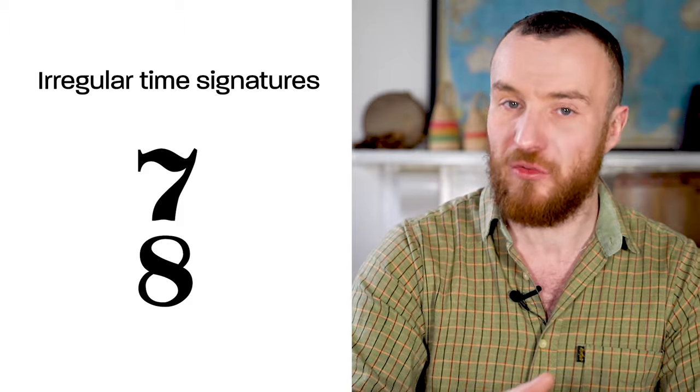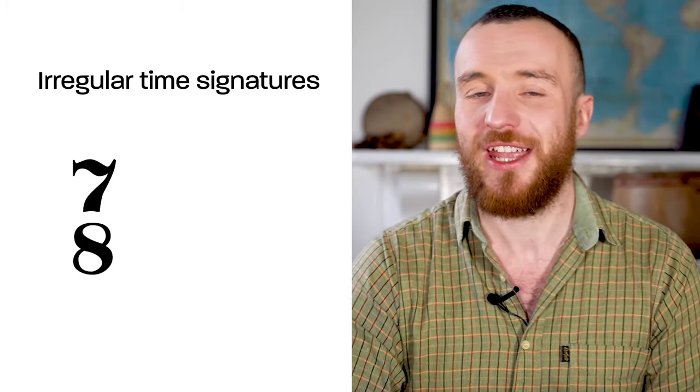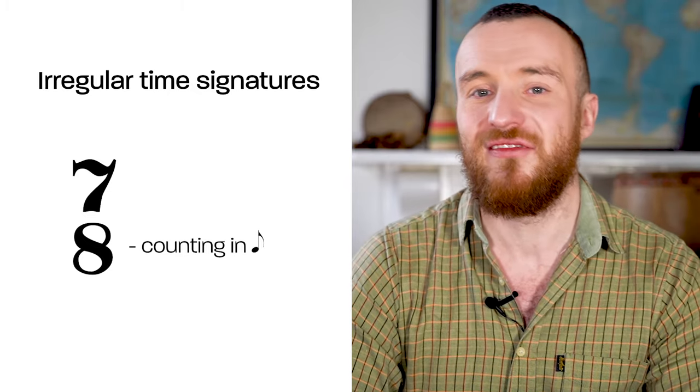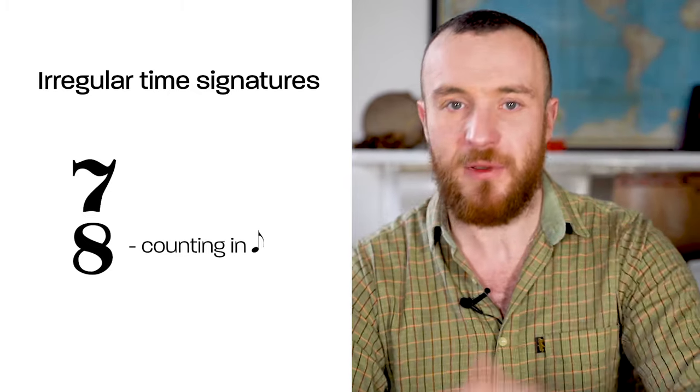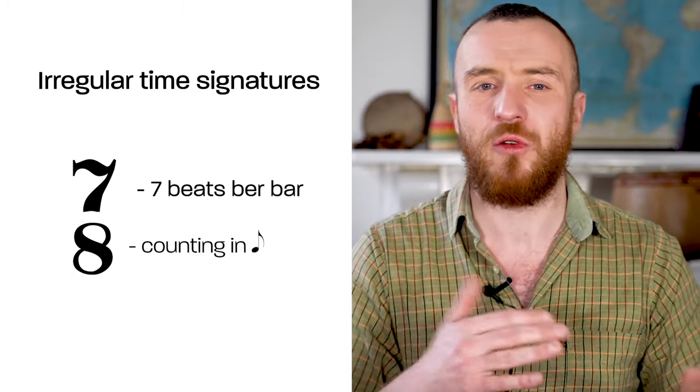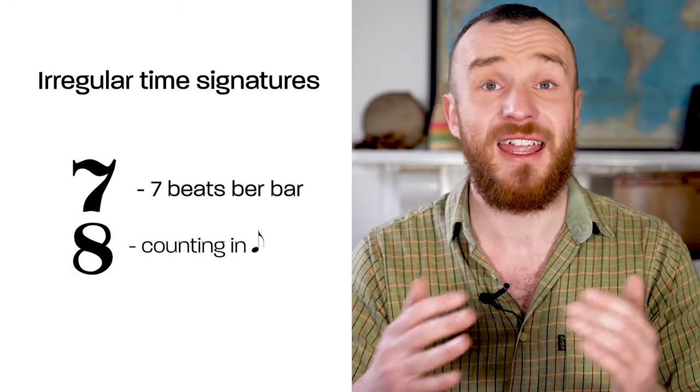What if we take the time signature seven eight. Let's look at the bottom number first, eight. This tells us that we are counting in quavers or eighth notes, and that is the value of each beat. The top number seven tells us there are seven beats. So seven eight means that we have seven quaver beats in every bar.